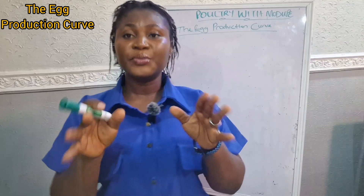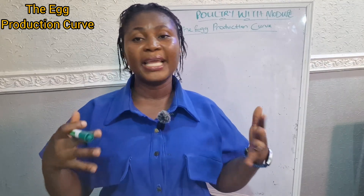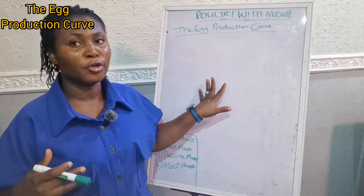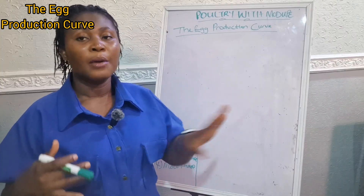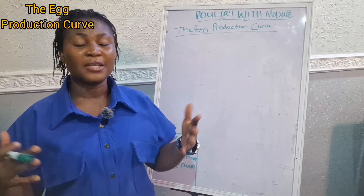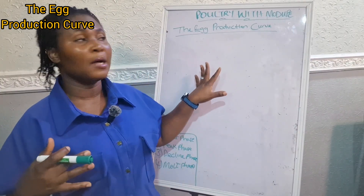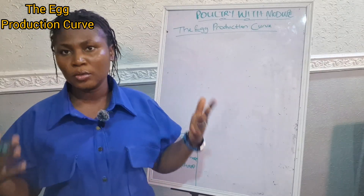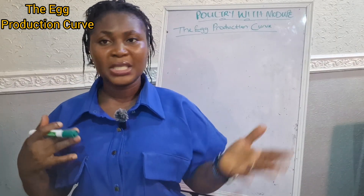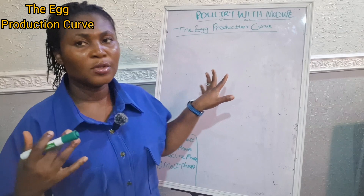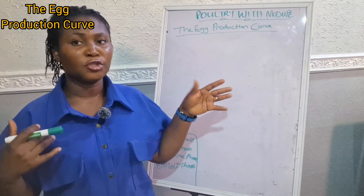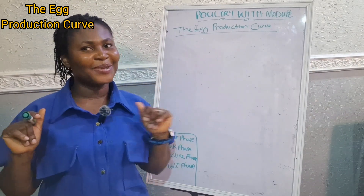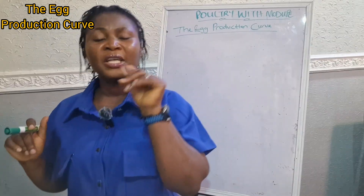I want you to know that the breed and genetics of the layer breed can influence how the egg production curve is going to look. But other environmental factors — like temperature, humidity, and so on — can also affect how the production curve would look. We're still going to draw the curve, so stick around and don't go anywhere.